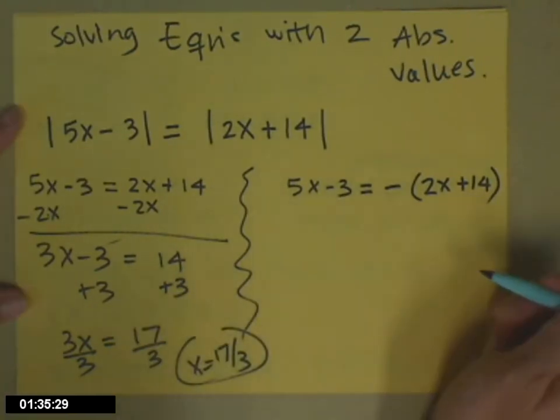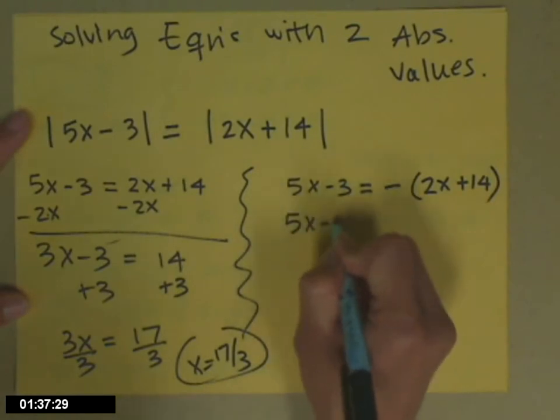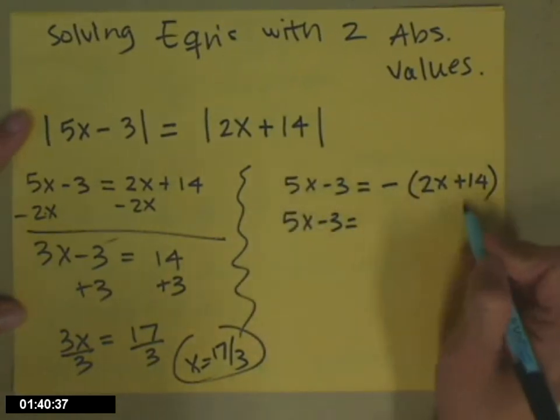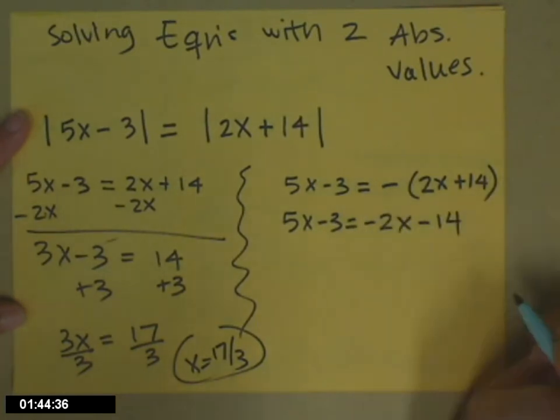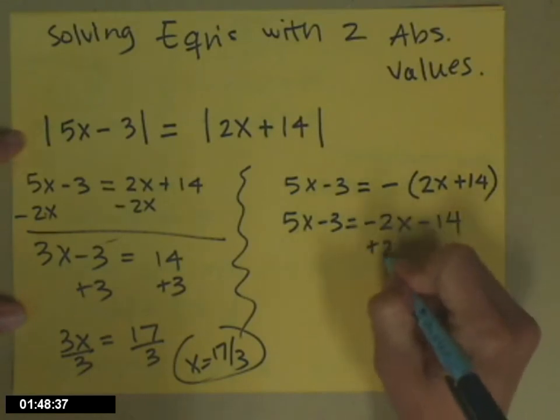I have to solve the second equation to find my second answer. So 5x minus 3 equals, distribute the negative sign, changes the sign of everything inside. Negative 2x minus 14. Now get all your x terms together. So add 2x to both sides.